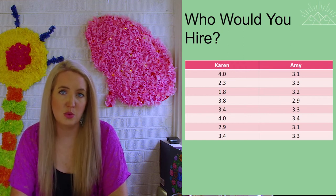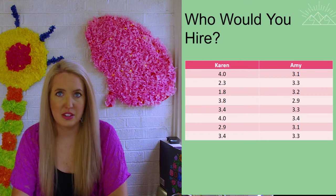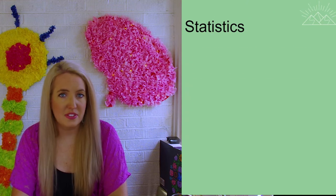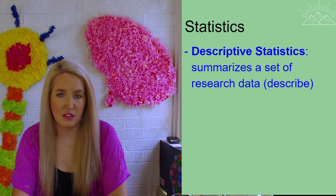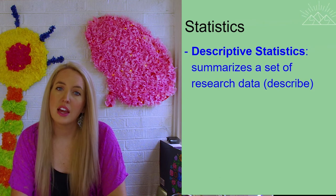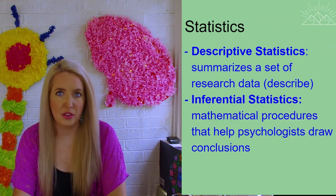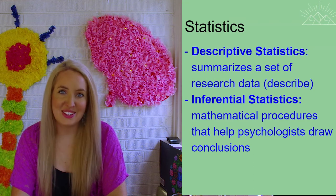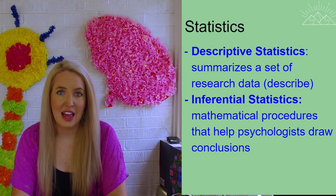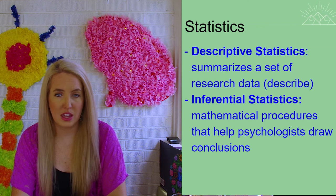And so this falls into what's known as descriptive statistics. Descriptive statistics summarize a set of research data. It's what helps us describe the information that we're presented with. Inferential statistics, we'll see here in a little bit, are ways that we can actually draw conclusions. Let's start though with descriptive statistics and some of the ways that we can report on the data that we see.